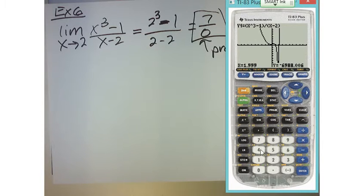Now, if I plug in 1.9999, hit enter. Now, I'm at negative, well, basically 70,000. Okay. So, what do you think the limit of this thing is going to be as it approaches 2?